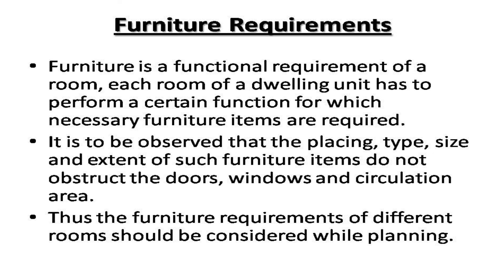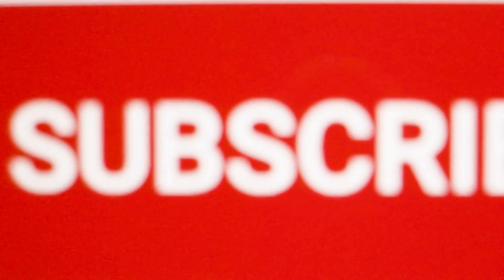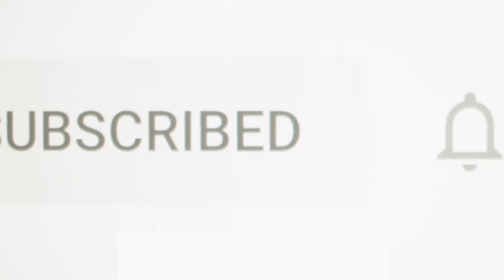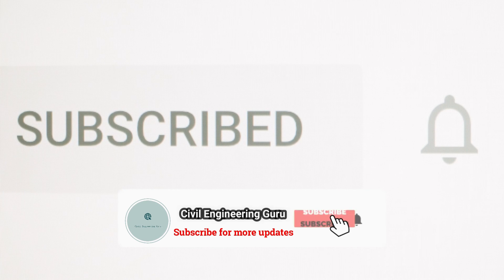Furniture is a functional requirement of a room. Each room of a dwelling unit has to perform a certain function for which necessary furniture items are required. It is important to observe that the placing, type, size, and extent of furniture items do not obstruct the doors, windows, and circulation area. Thus, furniture requirements of different rooms should be considered while planning.